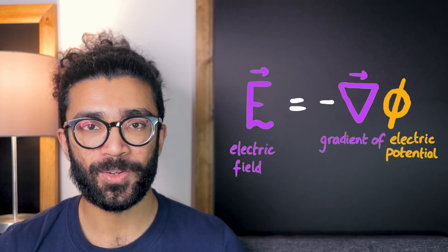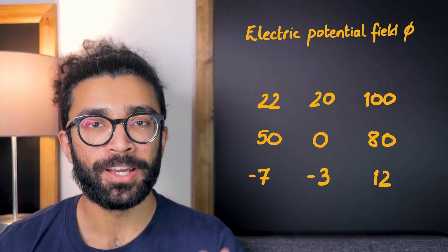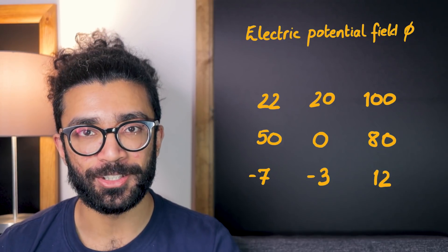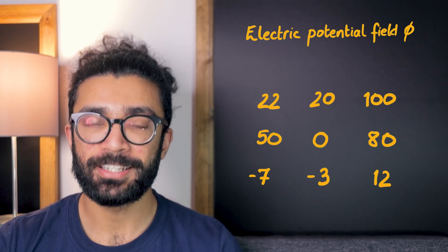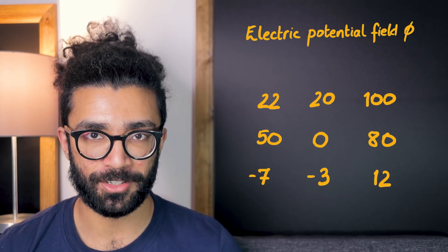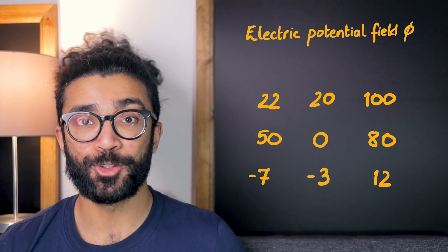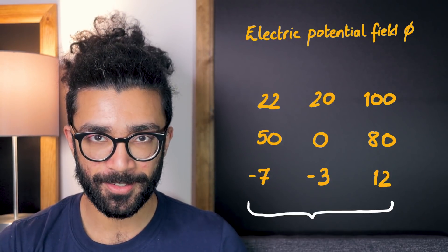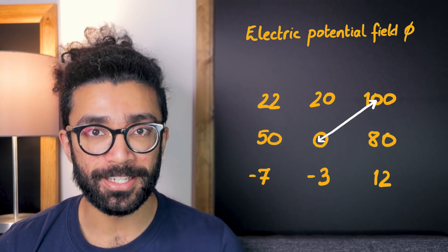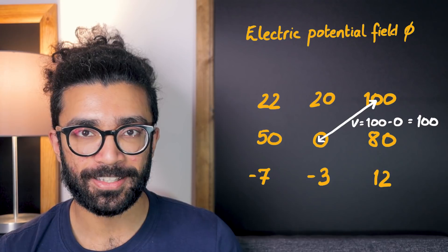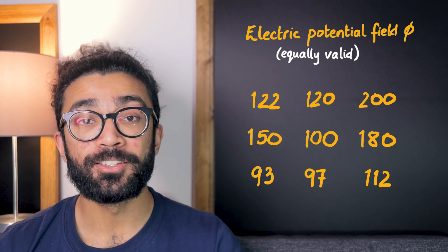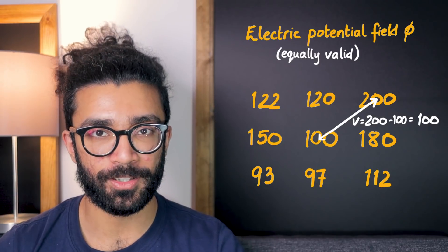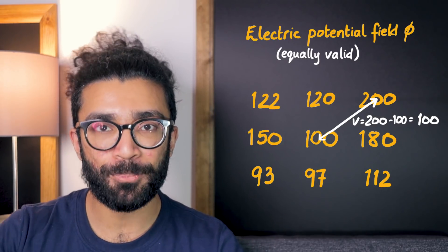These potential values directly relate back to the electric field, which is what causes our charged particles to move in the first place. Now here's an interesting fact: the actual value of the potential at any point in this region of space doesn't actually matter and it's not uniquely defined. What I mean is that there's no specific set value for electric potential at any point. All that matters is the difference between potential values at two points in the region of space. Our potential field could look like this, meaning the potential difference between two points is 100 volts, or equally we could shift the field and the potential difference between the same two points is still 100 volts.